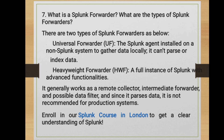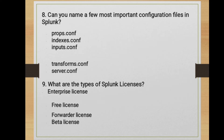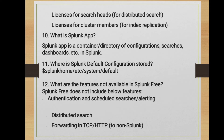What are the types of Splunk licenses available? Enterprise license, Free license, Forwarder license, and Beta license. There is also a license for Search Heads for distributed search, and a license set for cluster members for index replication.